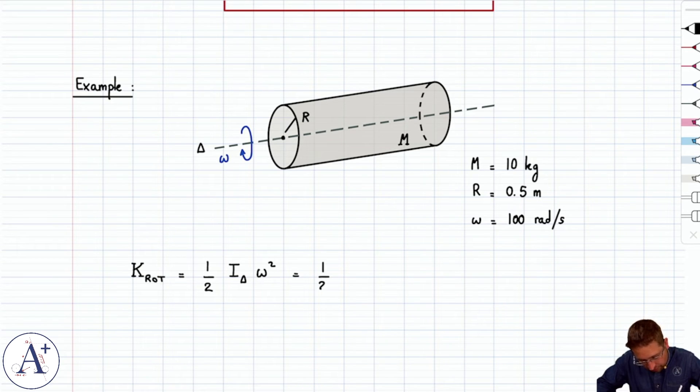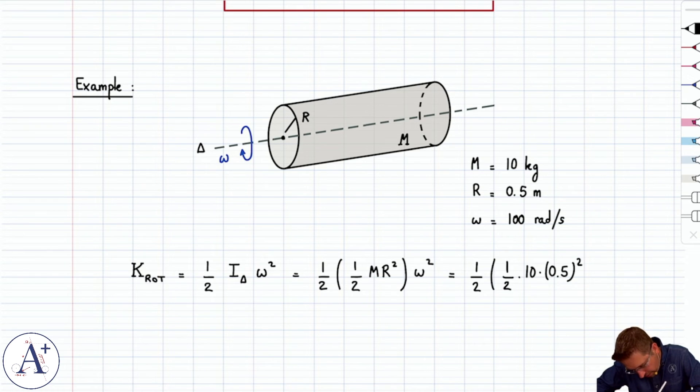So now you have ½ times the moment of inertia of a cylinder. You can look that up, that's ½mr². A lot of times it's just given times omega squared. And so that's going to be ½ × ½ × 10 × 0.5² × 100².